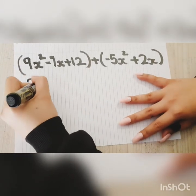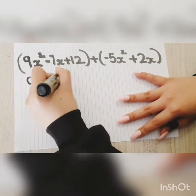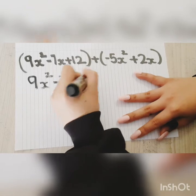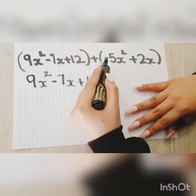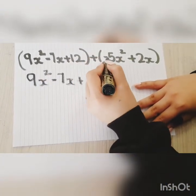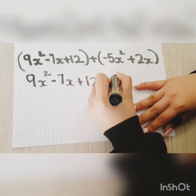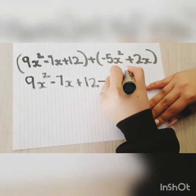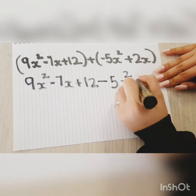So you have 9x² - 7x + 12 and what will happen here is when the positive multiplies by the negative it turns negative -5x² + 2x.